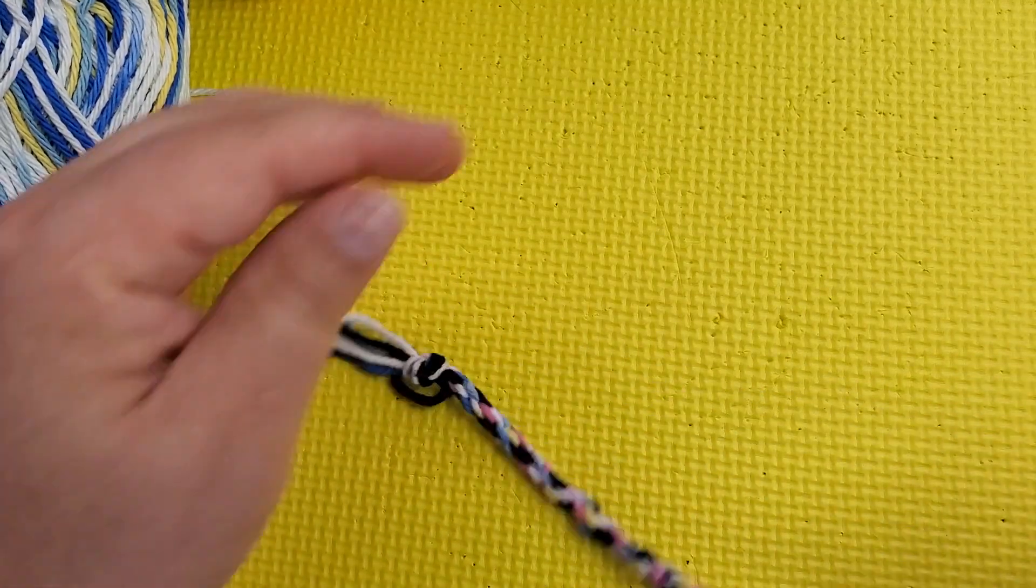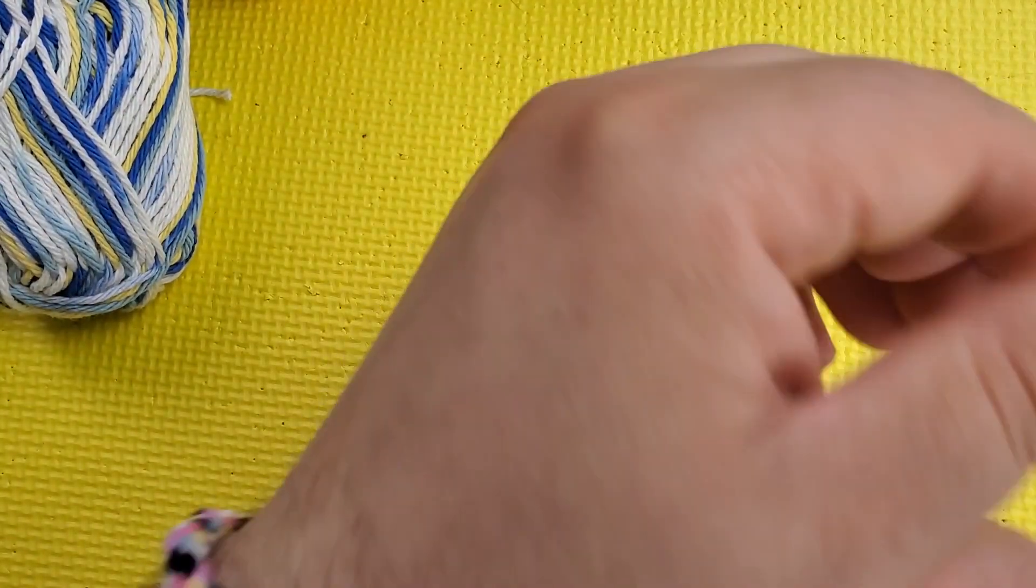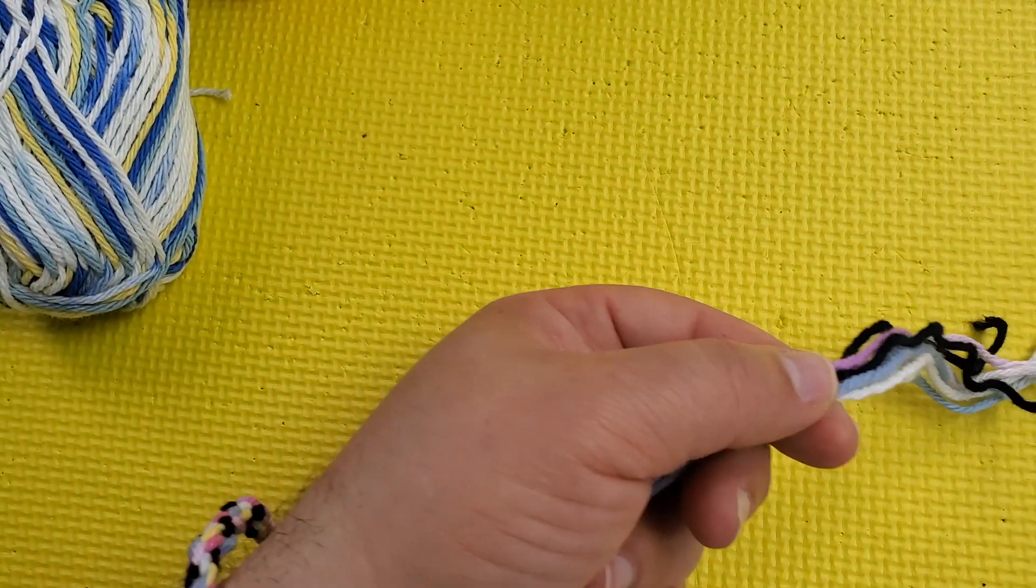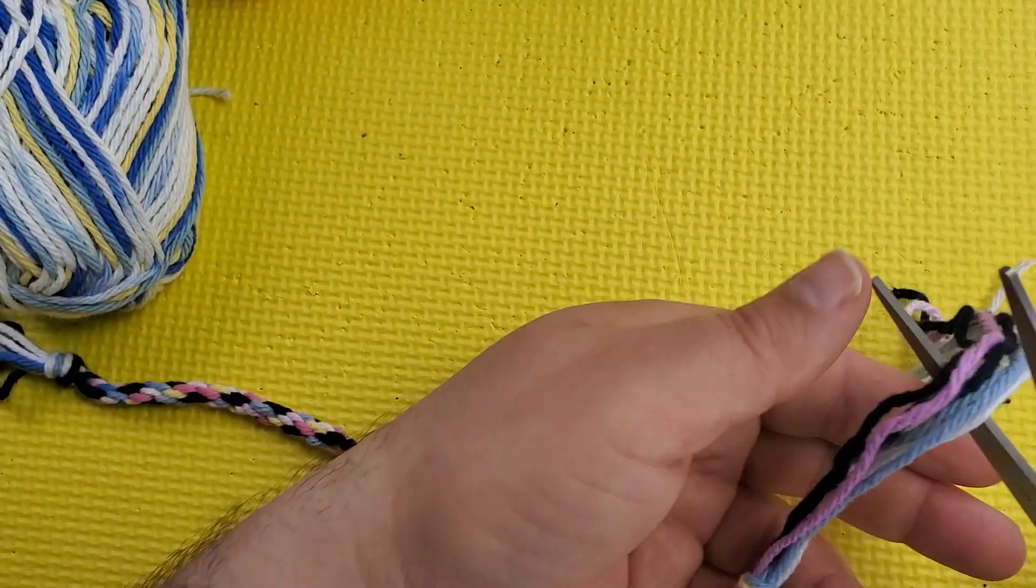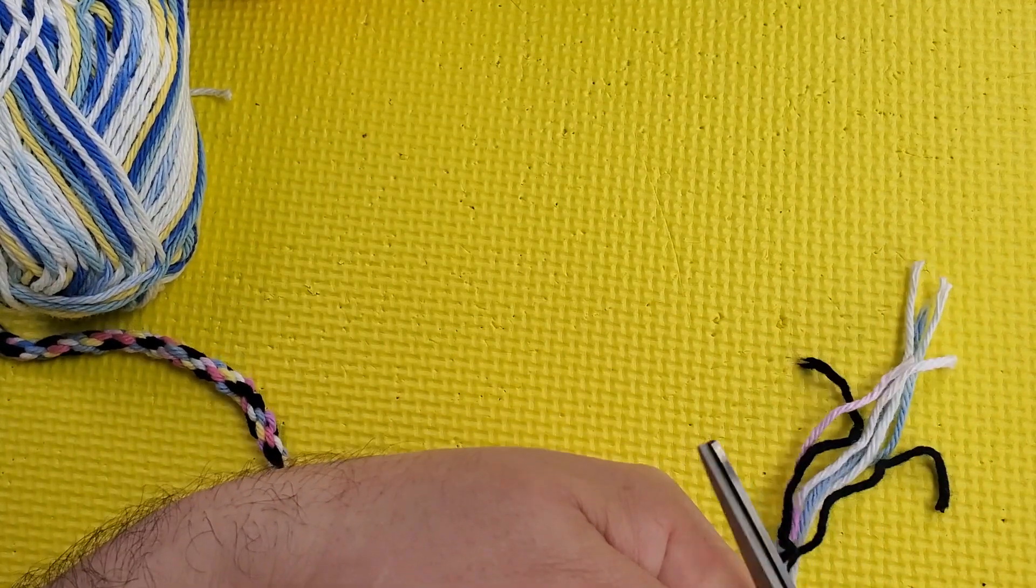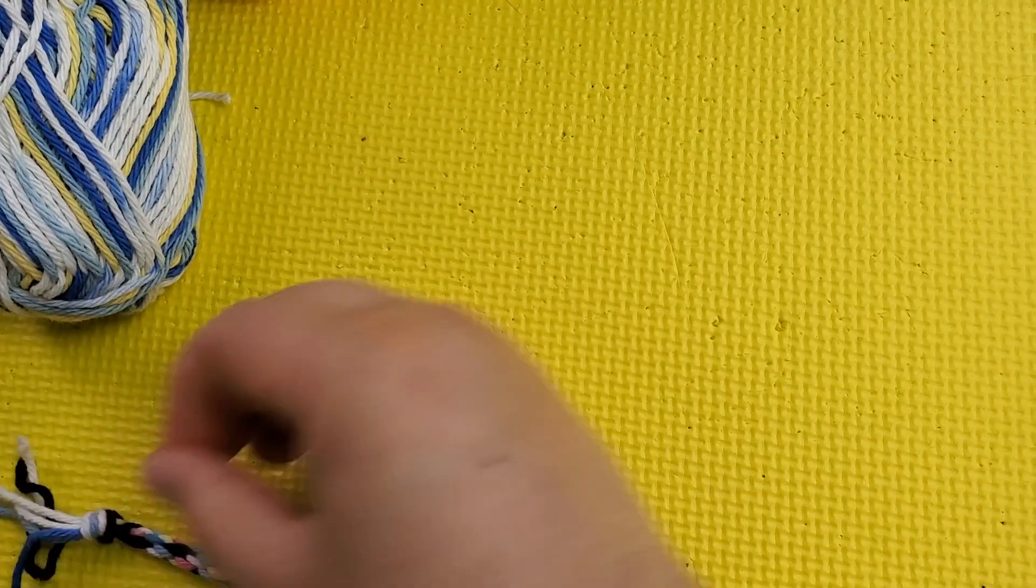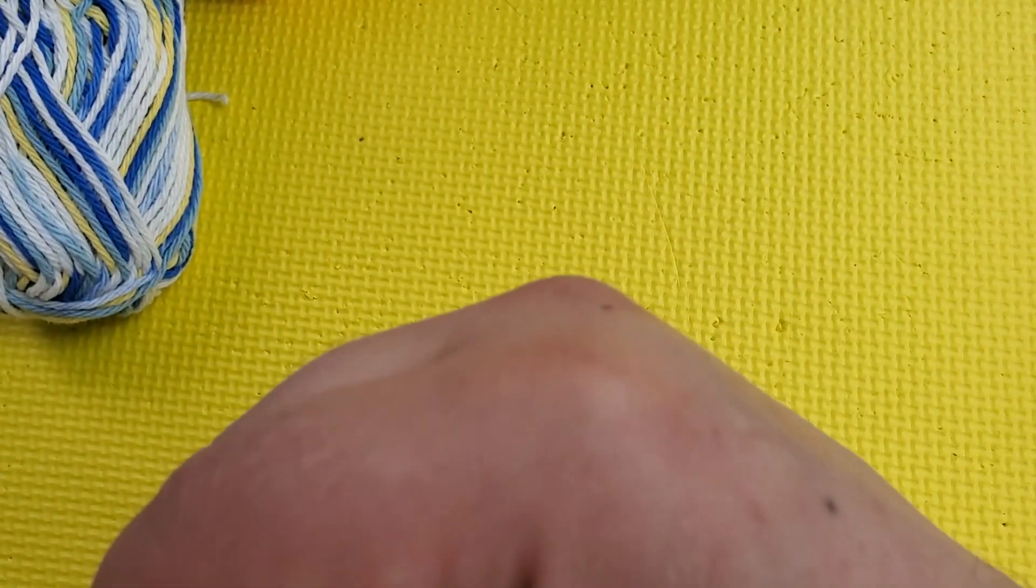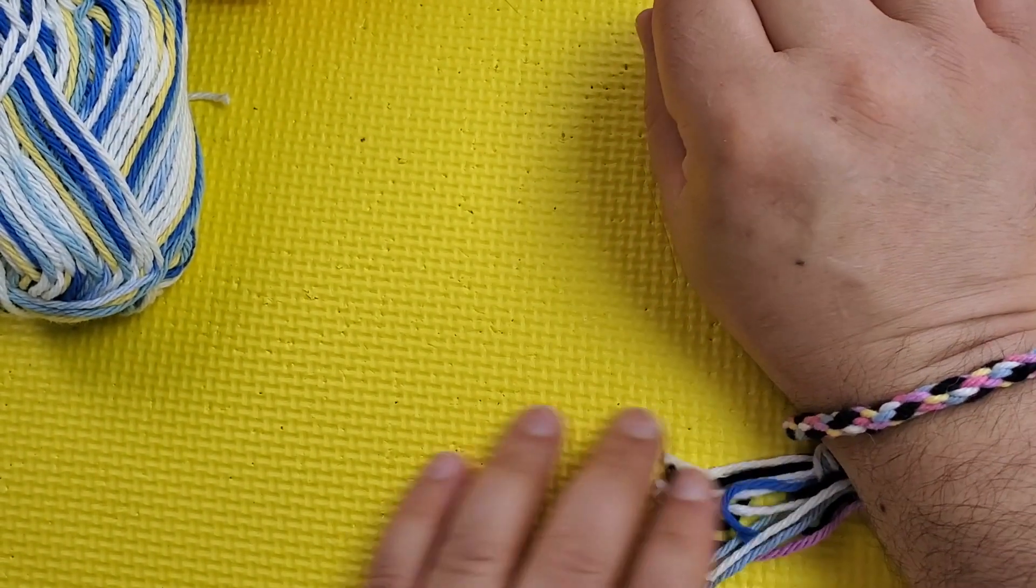And I can attach here on my arms. And I cut my yarn here to have the bracelet done. So you can just attach your bracelet like this, and your bracelet is done.